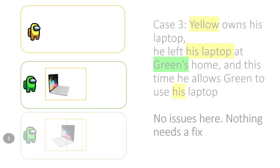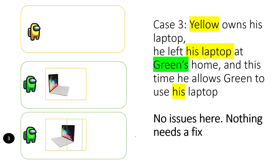In case three, yellow also left his laptop at green's place, but this time yellow says: hey green, you can use my laptop — I'll create a user account for you. But this laptop is still mine and you're just borrowing it. In this case, can green use yellow's laptop at green's home? The answer is yes, because yellow has granted permission, so green can use yellow's laptop.